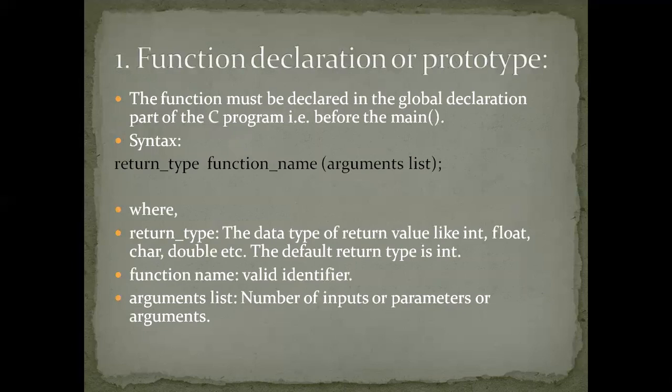The first element is function declaration, also called function prototype. Just as we have seen declaring variables or arrays, the function must be declared in the global declaration part of the C program before the main function. Global declaration means before the main function.